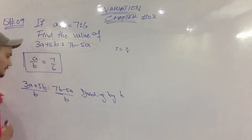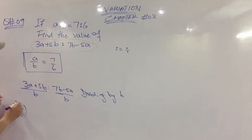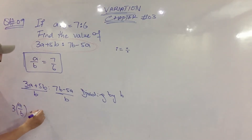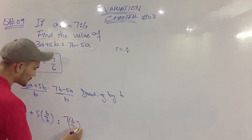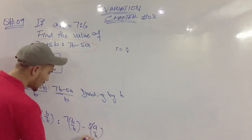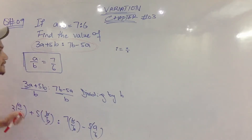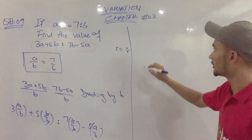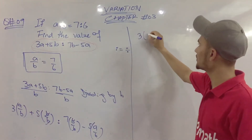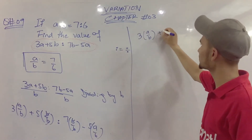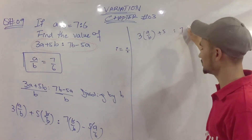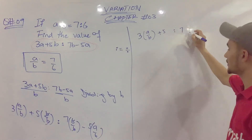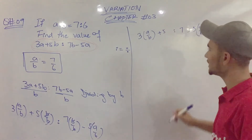We divide everything by b. So in the numerator we have 3 multiplied by a divided by b, plus 5. In the denominator we have 7 minus 5 multiplied by a divided by b. The b's cancel, leaving us in terms of a divided by b.